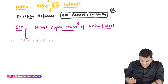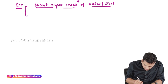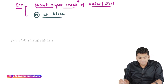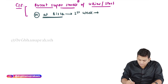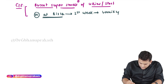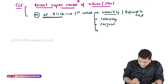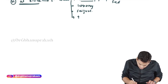The child will be normal at birth because the maternal enzymes were doing the reaction in utero. However, in the first week after birth, there will be vomiting, refusal to feed, lethargy, and seizure episodes.